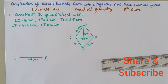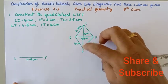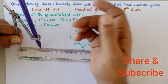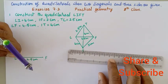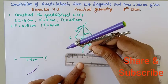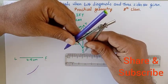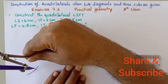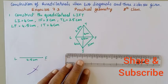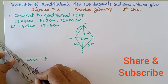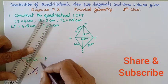Next, I will take my compass and measure LI which is 4 cm. It measures exactly 4 cm, and I will cut an arc. Then IF is 3 cm, so I will take 3 cm and cut another arc. Now let me join IL and FI.